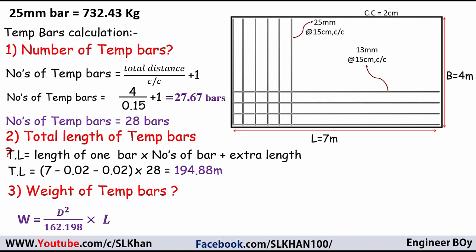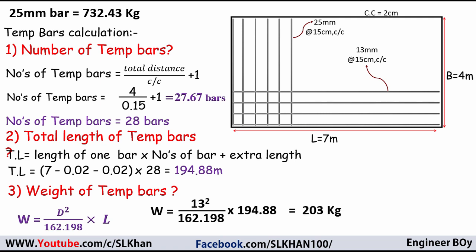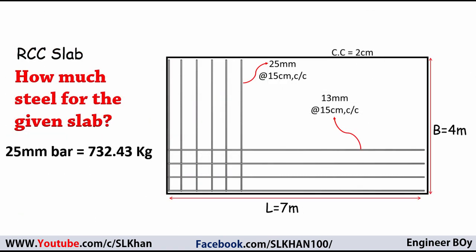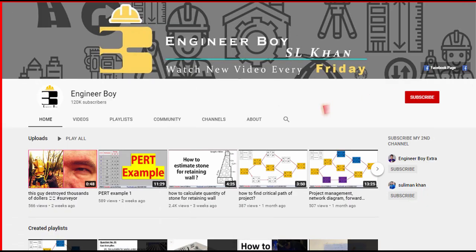Weight of temperature bars: W = d² / 162.198 × L. The diameter is 13mm, so: 13² ÷ 162.198 × 194.88 = 203 kg. Final results: order 722 kg of 25mm bars for main bars, and 203 kg of 13mm bars for temperature bars. If you like these types of videos, please hit the subscribe button and press the bell icon.